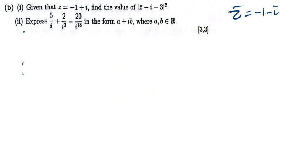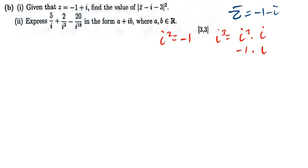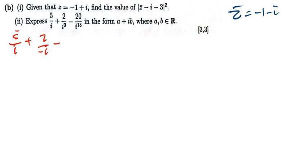Let's go to part 2. One thing we should take note is that i squared equals negative 1. So if I have i to the power 3, it's the same as i squared times i, which is negative 1 times i, giving negative i. So I'll rewrite this as 5 divided by i plus 2, then I'll have negative i.